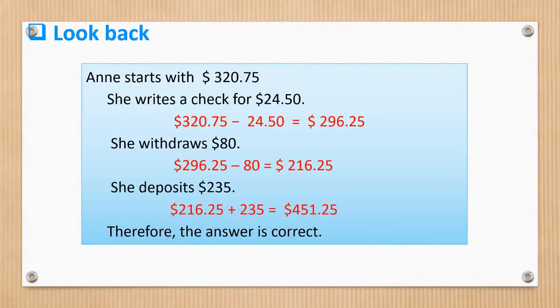But, again, we still have to recheck to make sure. So, based on the result that was given, we have $320.75 as the starting money of Ann in the bank without the withdrawals and the deposit yet.